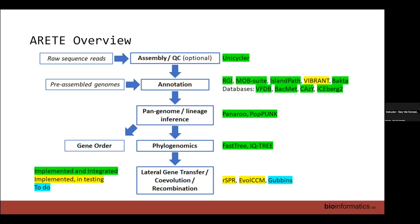For the lateral gene transfer and recombination component, ARETE uses programs like RSPR — a rooted subtree prune and regraft algorithm — and OCCM, the community co-evolution model, which looks at pairs of genes or pairs of mobile genetic elements and tries to figure out if they're co-segregating through the tree, assessing whether their presence-absence patterns are associated in the tree or random. Gubbins is used for whole-genome-sequence-based detection of recombination.